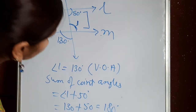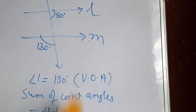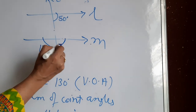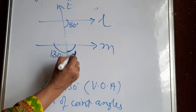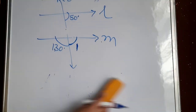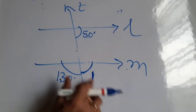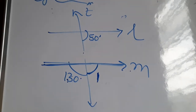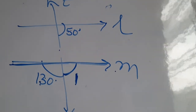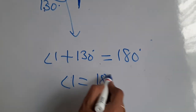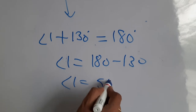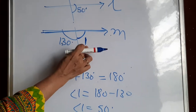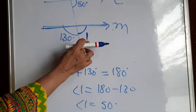We can do the same problem by another method. Angle 1 and 130 form a linear pair — they are on the same straight line, so angle 1 plus 130 equals 180. Therefore angle 1 equals 50 degrees. Now if angle 1 equals 50 and the other angle is also 50, these are corresponding angles. Since corresponding angles are equal, the lines are parallel. Always write the reason, otherwise your answer will be marked wrong.